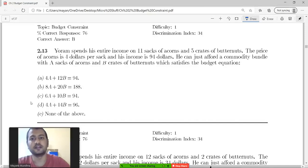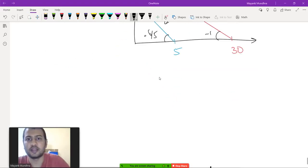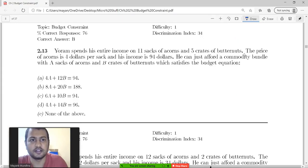Yoram spends his entire income on 11 sacks of acorns and 5 crates of butter nuts. So 11 times PA plus 5 times PB equals I, that is income. That is the first equation.